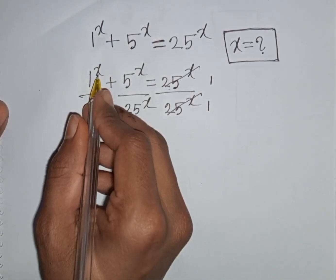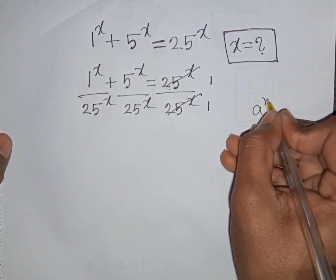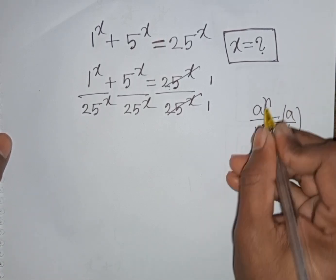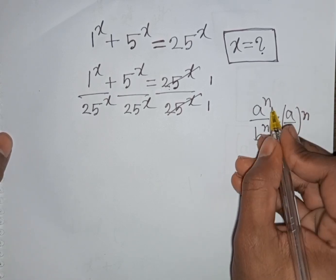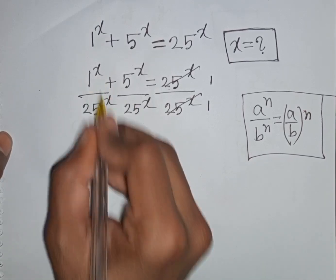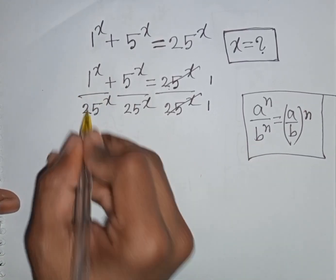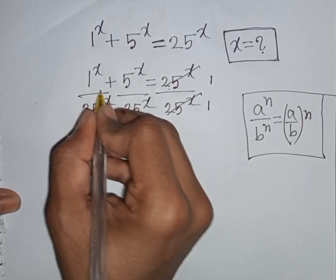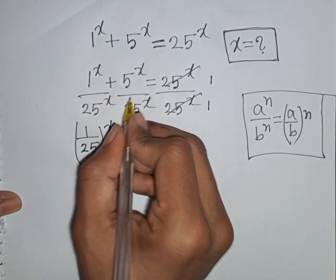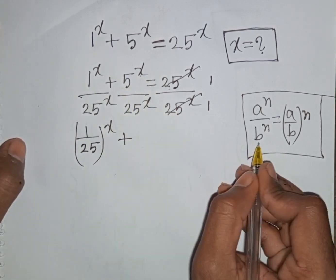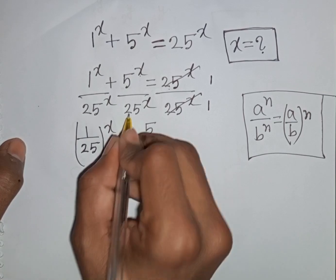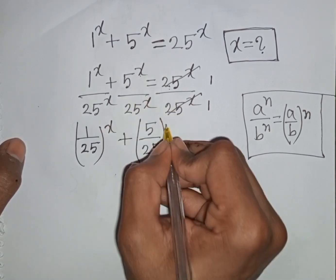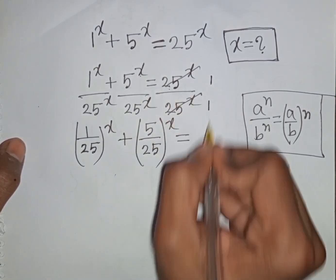1 power x divided by 25 power x — these have the same power but different bases. Remember the formula: a power n times b power n equals (a times b) power n. So 1 power x divided by 25 power x becomes (1/25) power x, and 5 power x divided by 25 power x becomes (5/25) power x, which equals 1.